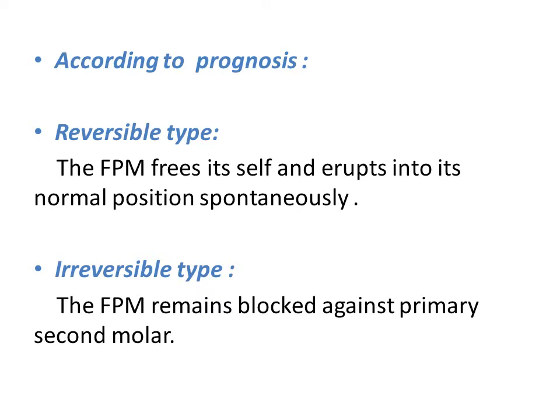In the irreversible type, the first permanent molar remains blocked against the primary second molar. Here, we need to intercept and correct its pathway of eruption.